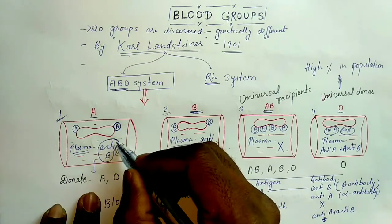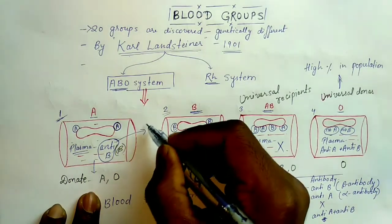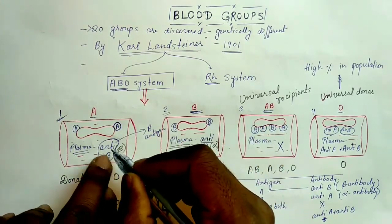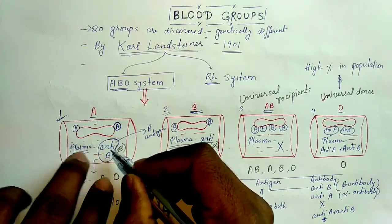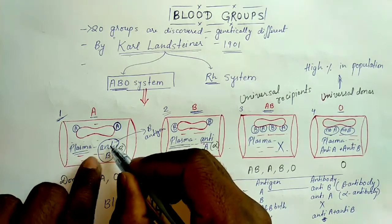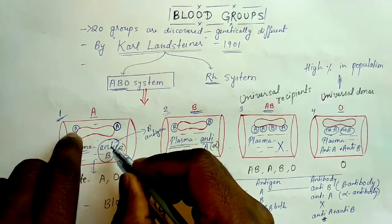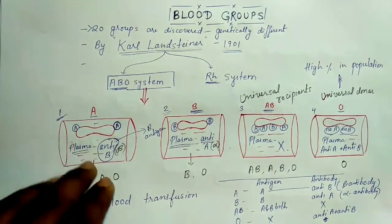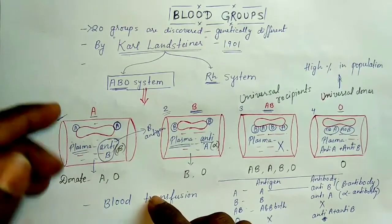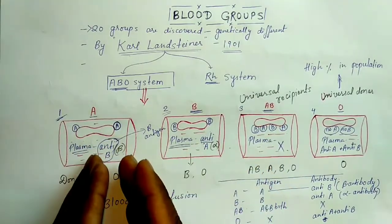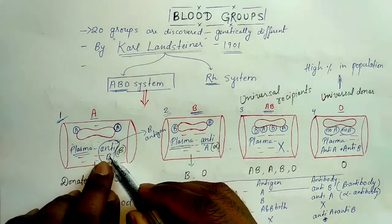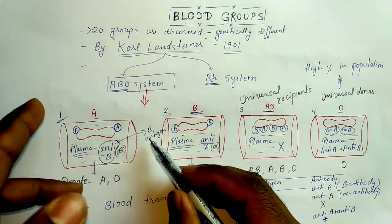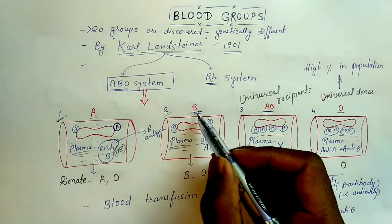Anti-B antibody will always react with B antigen; it will never react with A antigen. So in the same person, this antibody will never destroy the person's own RBC. But suppose if somehow this person gets a blood transfusion and blood group B comes in, then this antibody will recognize the B antigen and destroy it.